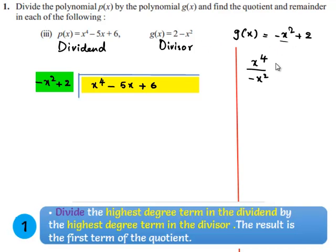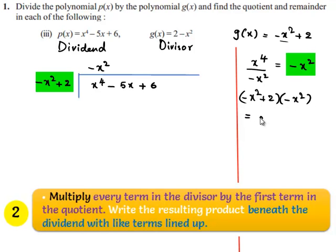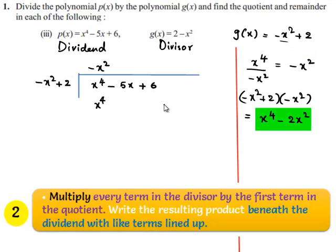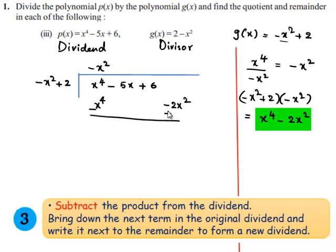On dividing them we get minus x square. So, minus x square can be written at the place of the quotient. The divisor, which is minus x square plus 2, when multiplied by minus x square, gives x power 4 minus 2x square. On interchanging the signs, x power 4 and minus x power 4 will be cancelled, and 2x square minus 5x plus 6 remains.